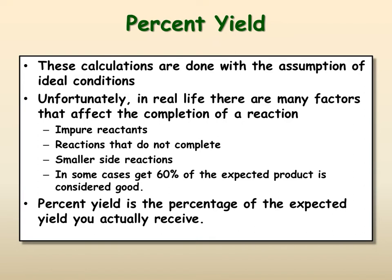You can have smaller side reactions that start to use up some of your reactants, therefore not making the right products. According to some laboratories, getting about 60% of your expected product is actually pretty good. If you can get higher than that, that's even better. But percent yield is the percentage of the expected yield you actually receive. So you have to know what you expect to receive, and then you also need to know what you actually get.